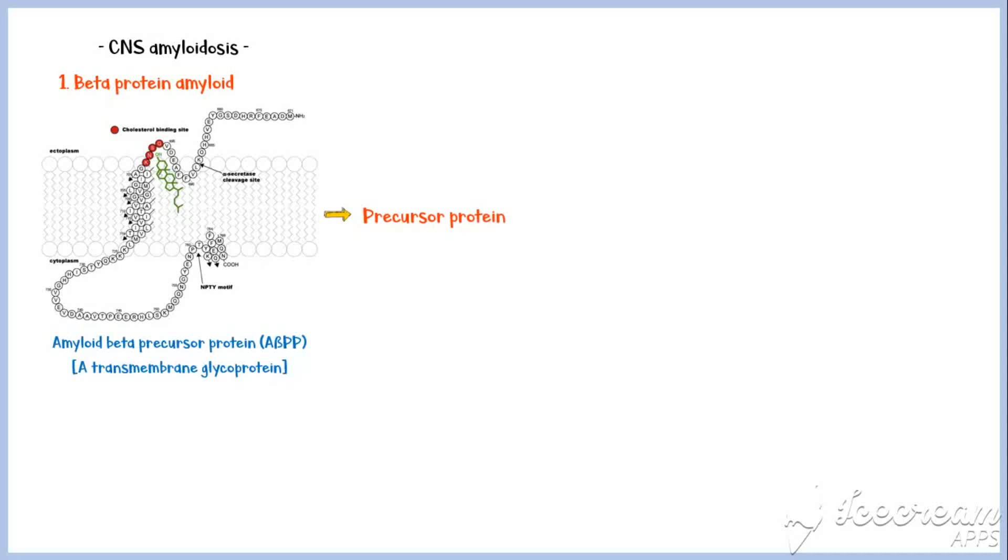In normal individuals, amyloid beta-precursor protein has several important functions, including regulation of signal transduction mechanisms and regulation of neuronal growth and repair. It also promotes formation and degradation of neuronal synapses.